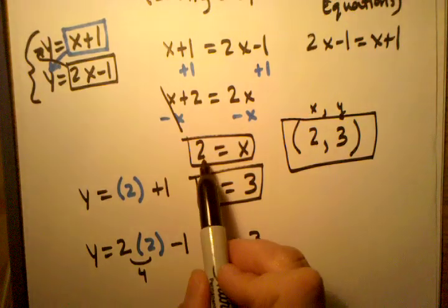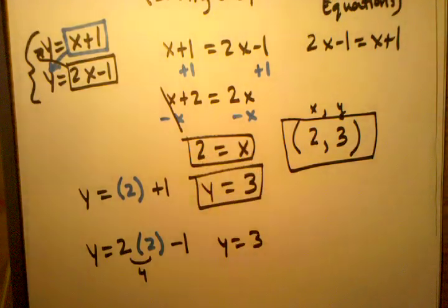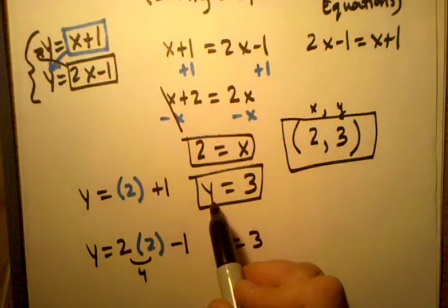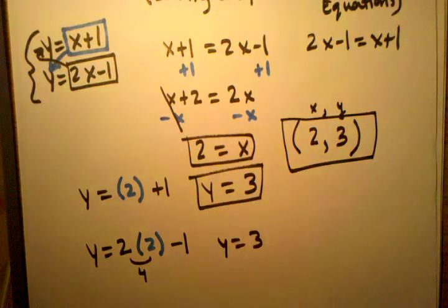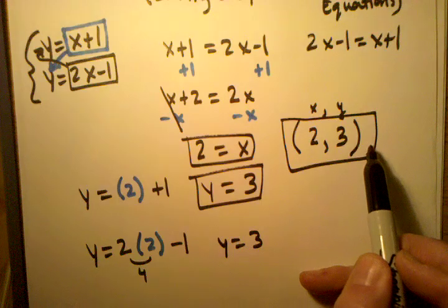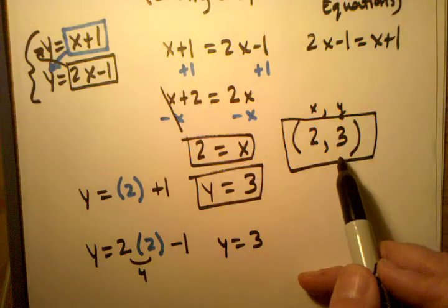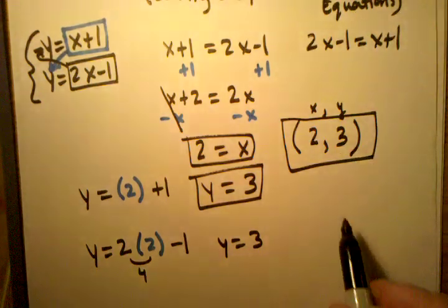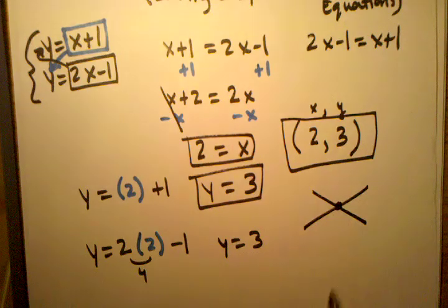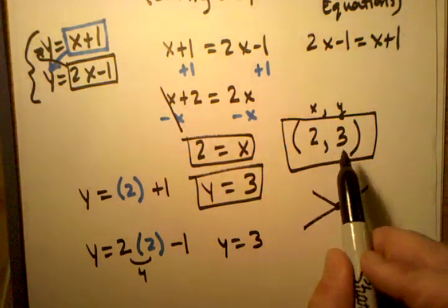A lot of times students either just stop when they find out what x is and they think they're done, or they stop when they find out what y is and they think they're done, and they don't realize that the actual solution needs to be written as the coordinates of a point, because that's what we're trying to find out. What is the point where the two lines are actually crossing? And there's the point. And so we need to write it as a point.